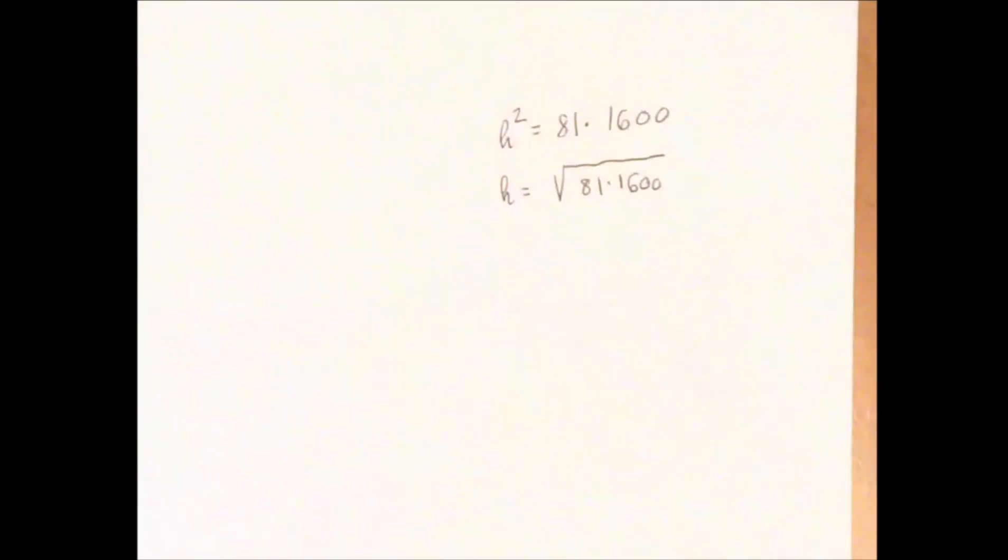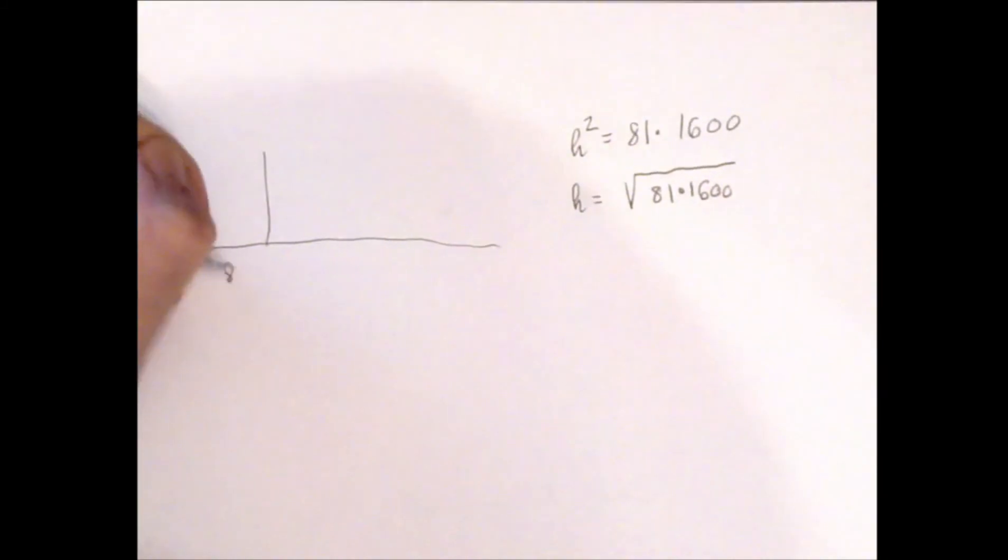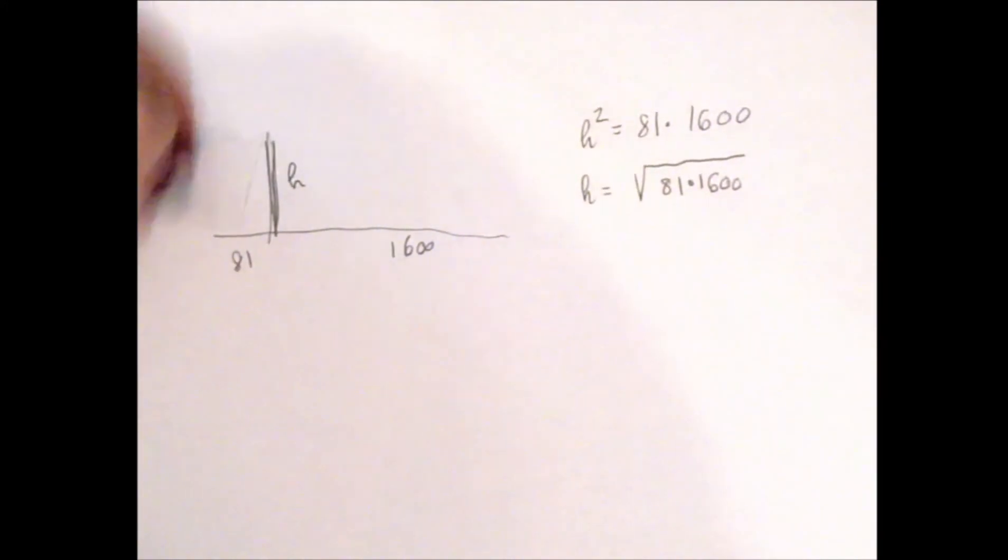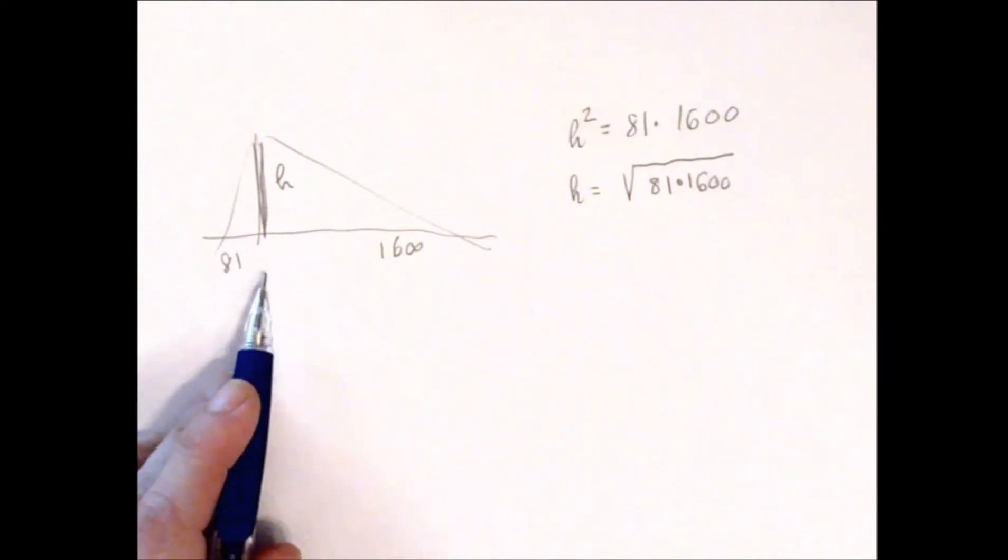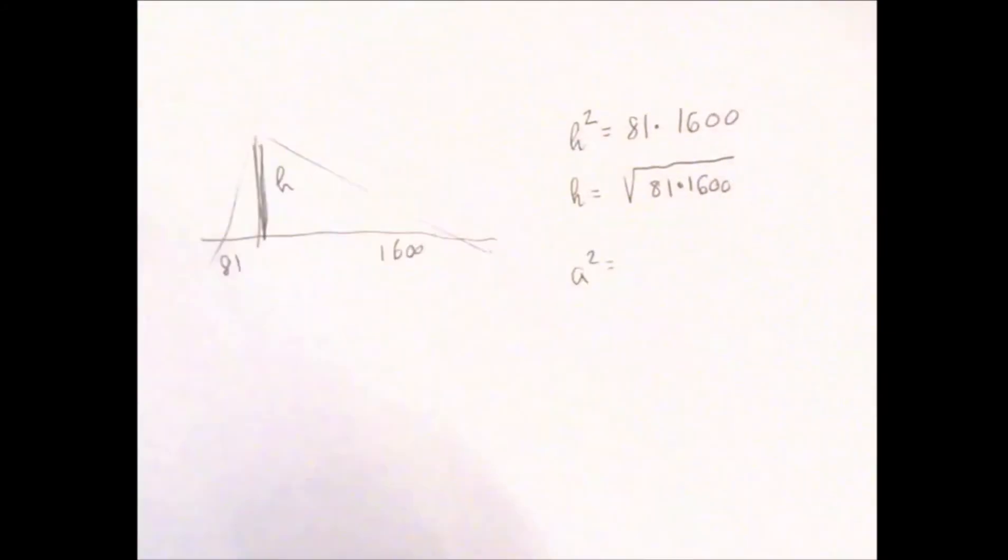Before we go, let me make one comment. We have seen equations such as h² equals 81 times 1600, which ultimately led to h being the square root of the product of two other sides. Actually these are not really sides in the original triangle—this was 81, this was 1600, and h the height turned out to be the square root of the product of these two.